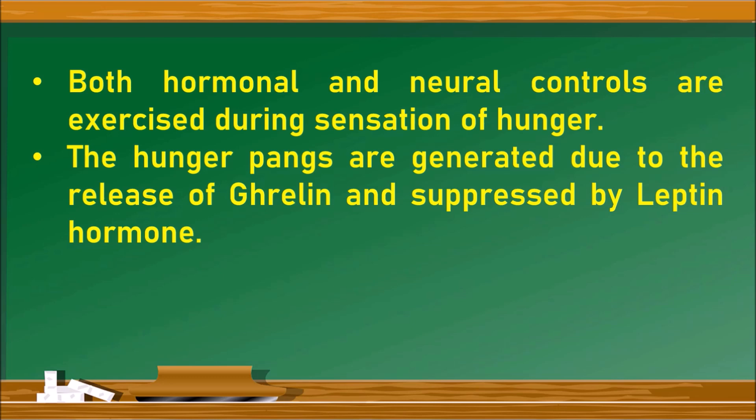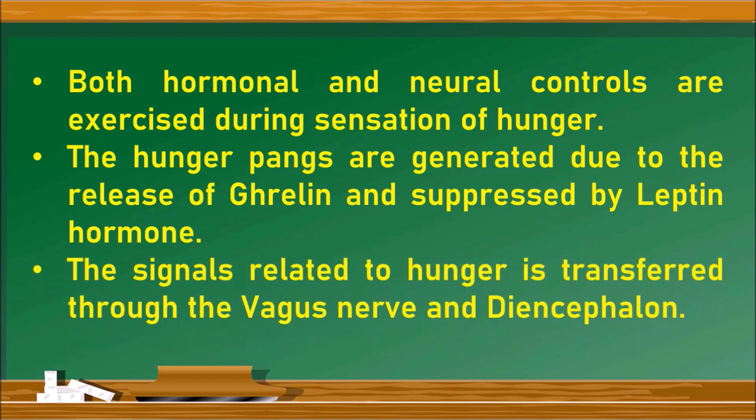Hunger pangs are generated due to the release of ghrelin hormone and suppressed by leptin hormone. At the same time, signals related to hunger are transferred through the vagus nerve and diencephalon, which are parts of the brain. Vagus is a cranial nerve and diencephalon is a part of the forebrain, both majorly involved in transferring hunger-related signals. Hence, both hormonal and neural coordination are exercised during the sensation of hunger.